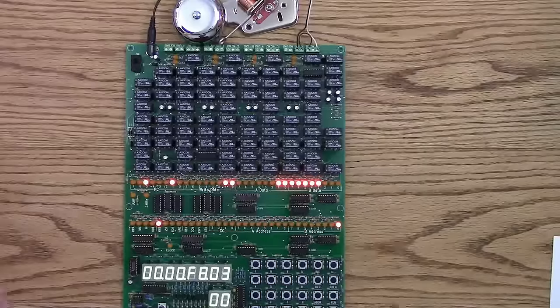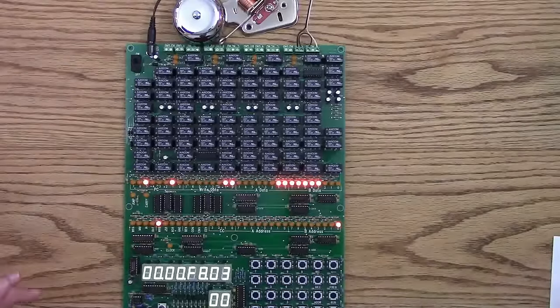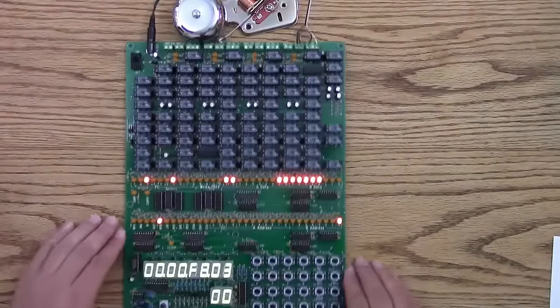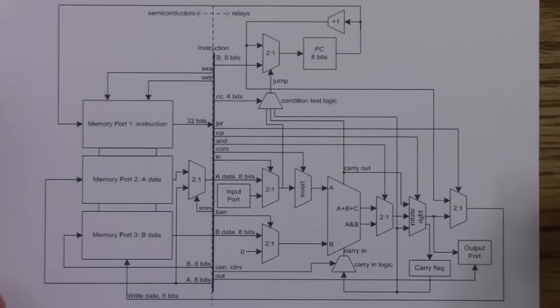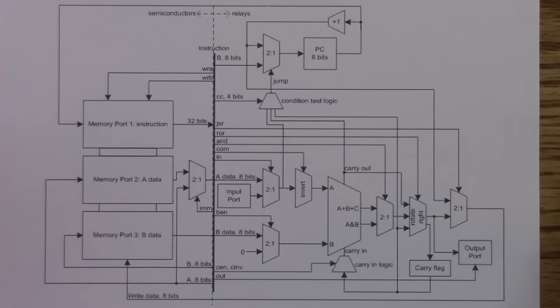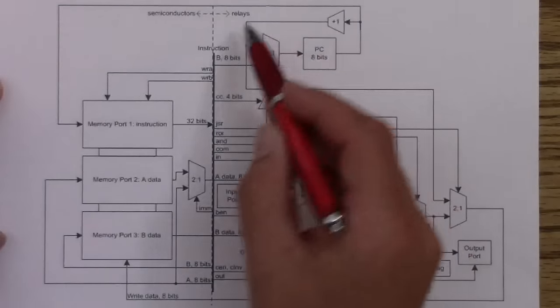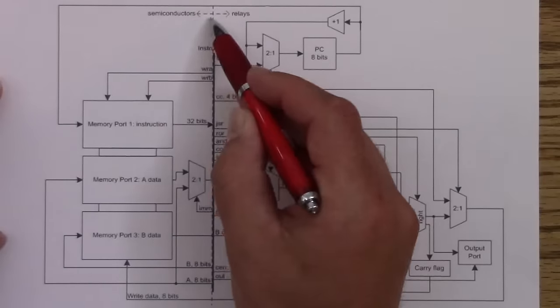What else can I say about the relay computer? How does it work? You might want to know. So I'll show you that. So here's a block diagram, and let's go through how it works. So, here's the dividing line. On this left side, these are all semiconductors, and the right side are the relays.